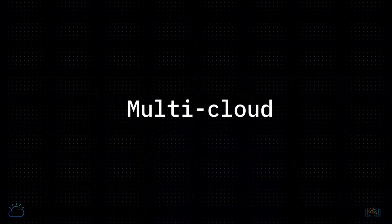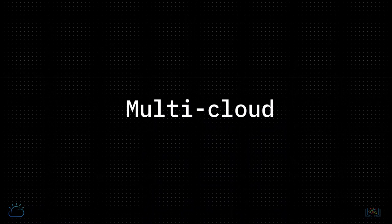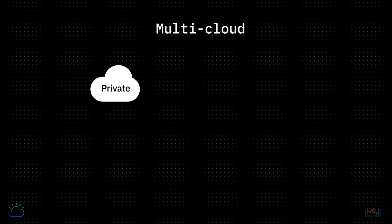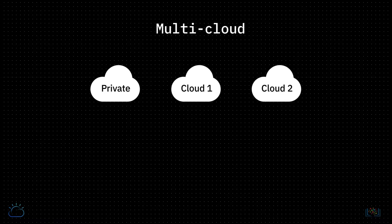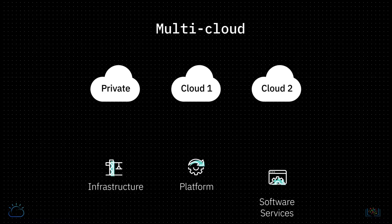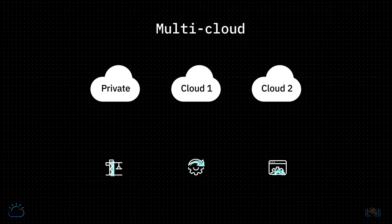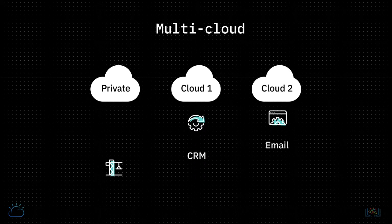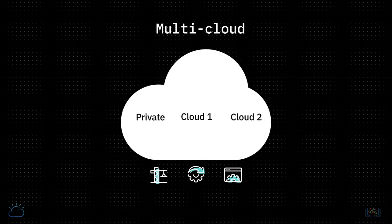Multicloud is a cloud adoption strategy that embraces a mix of cloud models from different service providers – public, private, and managed – across infrastructure, platform, or software services. For example, a business may consume email as a service from one provider, a CRM application from another, and infrastructure from yet another provider.